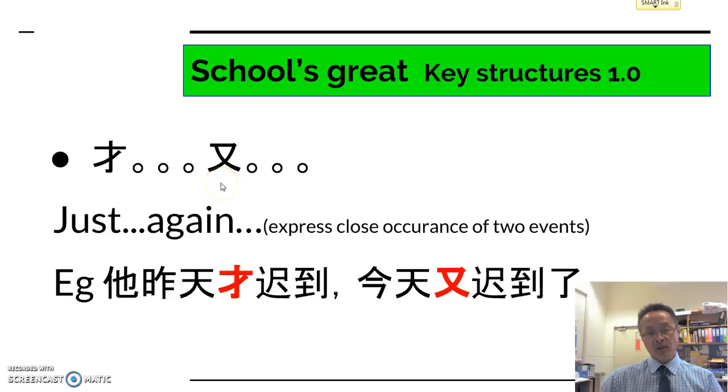And 又 has several meanings. First meaning is in the future tense again, and also when 又 is repeated when we're using more than one adjective. But here 才 and 又 just again expresses close occurrence of two events.